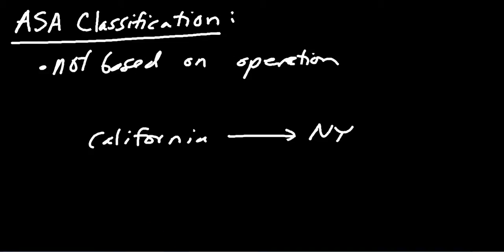Let's go through the ASA classification system. There are six different classifications, ASA 1 through 6. We'll start with ASA 1. This is a normal healthy patient—a patient that doesn't have any comorbid conditions, no medical issues being treated.